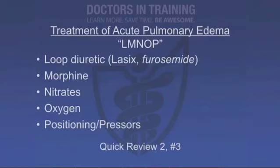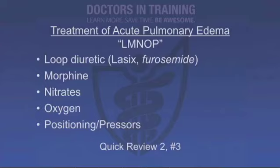What mnemonic can you use to remember the treatment of acute pulmonary edema? LMNOP. L is for loop diuretics like Lasix — furosemide. M is morphine. N is for nitrates. O is for oxygen — the patient may need supplemental oxygen by mask or even intubation. P is for positioning: have the patient sit up with legs down so fluid goes to the legs — fluid in the legs won't kill you, but fluid in the lungs will. The other P is for pressors: patients with heart failure might need dobutamine to stimulate heart contractility.